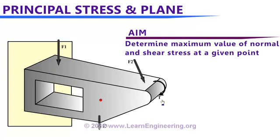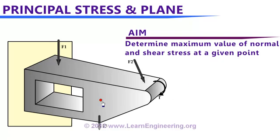Consider a structure under a given loading condition. The engineer in charge of design wants to predict whether this structure will withstand the given load at a specific point. To do that, the first thing to calculate is the maximum shear stress and maximum normal stress induced at this point. We want to determine maximum normal stress and maximum shear stress induced at a given point — first maximum normal stress, and along with that, maximum shear stress.